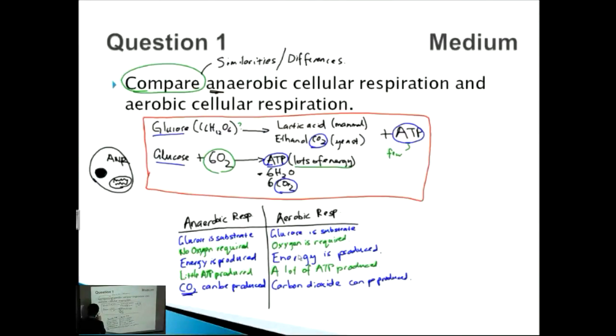Aerobic respiration occurs in the mitochondria, these little jelly-like things. That's where aerobic respiration occurs. So that's another difference over here. In this case, anaerobic respiration occurs in cytoplasm, whereas aerobic respiration occurs in mitochondria.